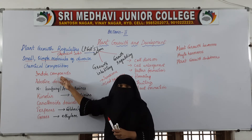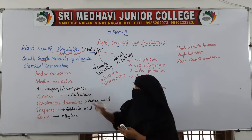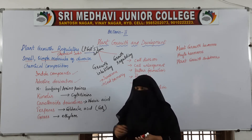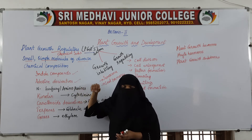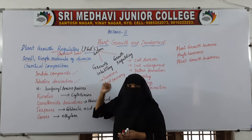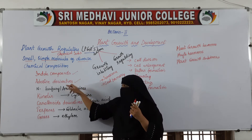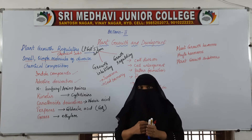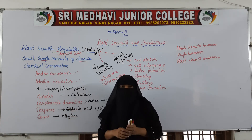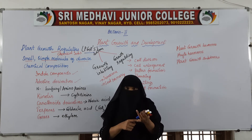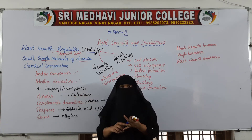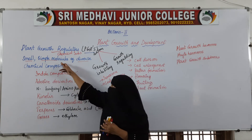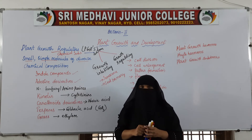The different chemical compositions include indole compounds such as indole acetic acid and indole butyric acid, adenine derivatives, kinetins, terpenes, carotenoid derivatives, and also a gaseous substance — ethylene — which is a volatile substance. These are the different chemical substances found in plant growth regulators.